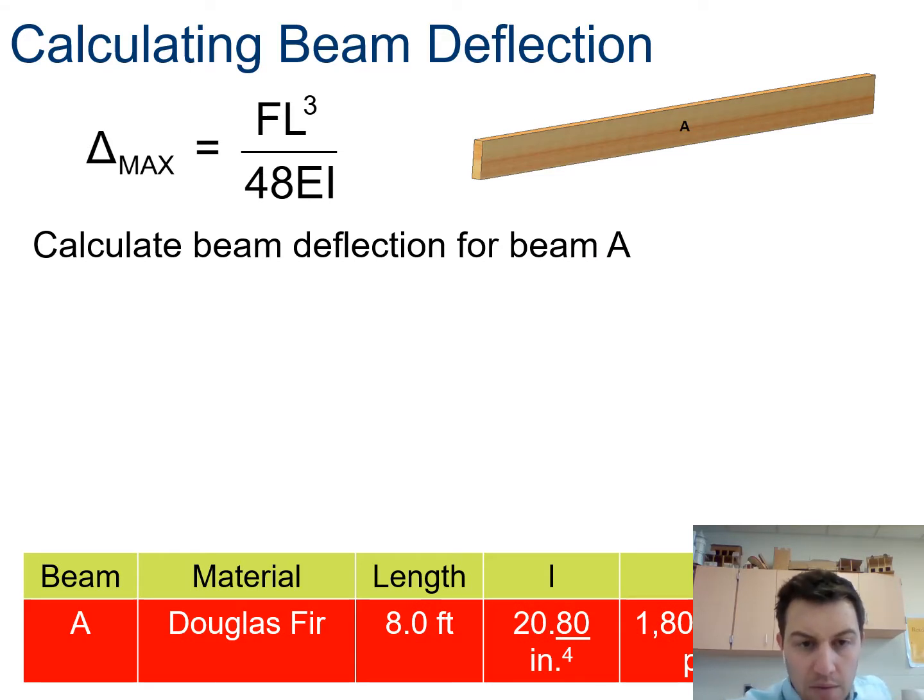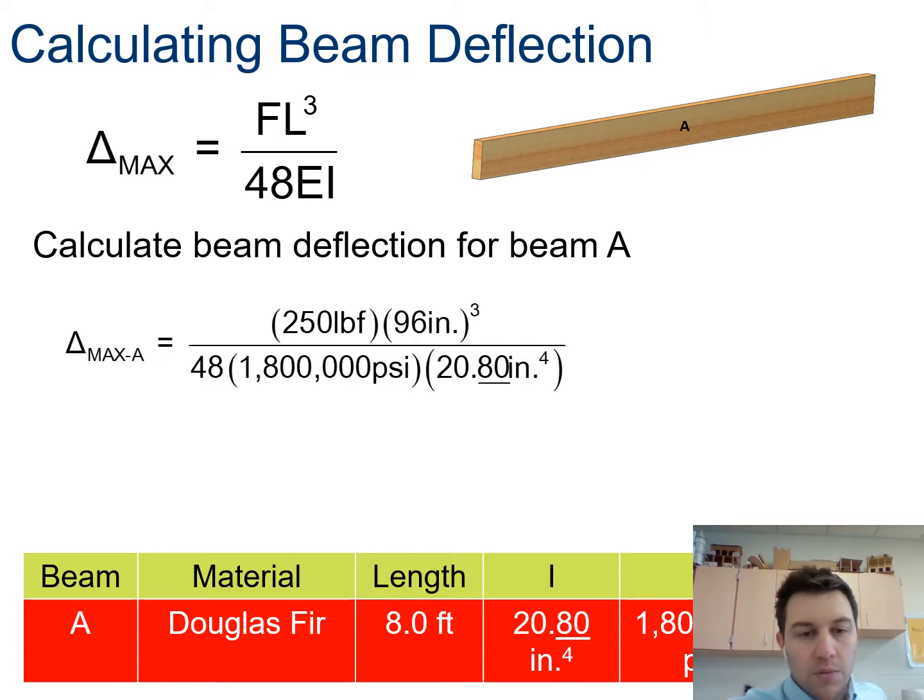So for beam A delta max, I'm given the length, I'm given the modulus of elasticity and I'm given the load, which would be the force. So what do I do? I just take them and plug them in. 250 times 96, because these are in PSI, I need to make sure this is in inches and I'll be sure to remind you guys of that. 96 inches cubed times 250 pounds and all that will be divided by 48 times 1.8 million PSI times 20.8 inches to the fourth. And when you plug all of that in properly, you should get 0.12. So I would recommend practicing typing this exact setup into your calculator to make sure you get 0.12 and make sure you are understanding how you are typing things in.